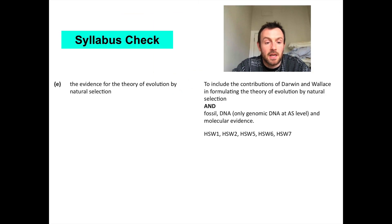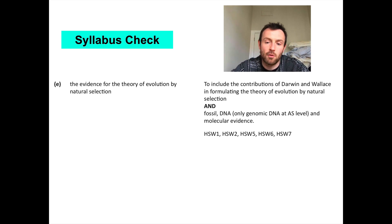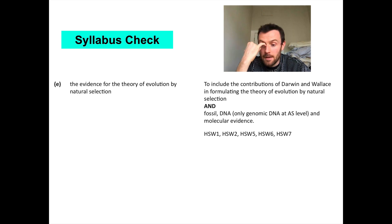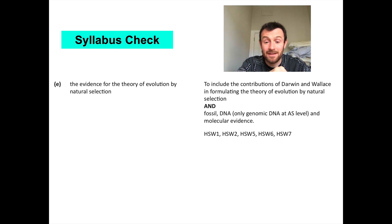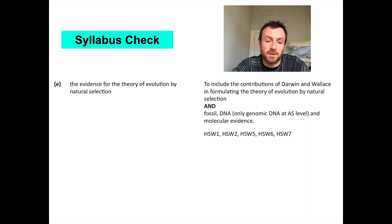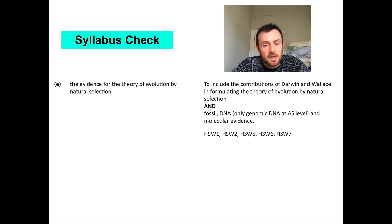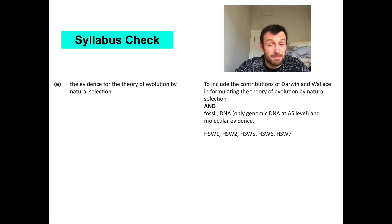Finally, let's check the syllabus to confirm we can do what we should be able to do. The syllabus says you should be aware of the evidence for the theory of evolution by natural selection, including the contributions of Darwin and Wallace in formulating the theory. You need fossil evidence, DNA evidence — including mitochondrial DNA and chromosomal DNA — and other molecular evidence such as comparing proteins: for example, how many amino acid differences are there in the cytochrome C protein between different species. Next lesson we're going to start unpicking how evolution works, beginning with variation, then moving into natural selection and some mathematics related to analyzing variation. See you next lesson.